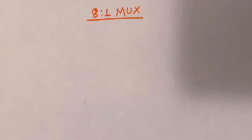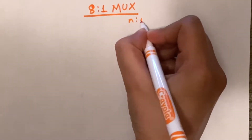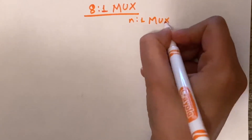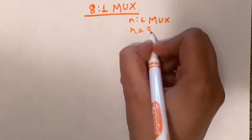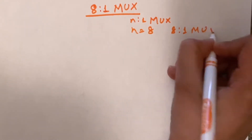Hey everyone, welcome to the channel. In this video we are going to learn about the 8-to-1 multiplexer. I have uploaded a previous video on what is a multiplexer and the 4-to-1 multiplexer — please check that. So what the 8-to-1 multiplexer will do: for an n-to-1 mux, here n equals 8, so we have an 8-to-1 mux.